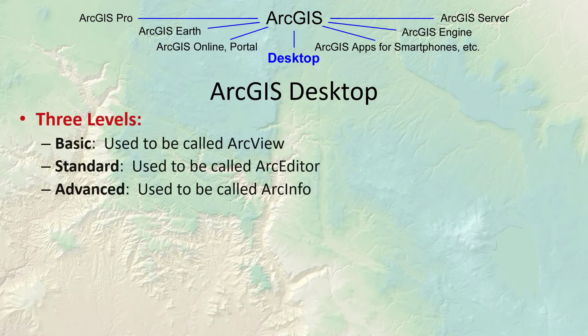Within Desktop there are three license levels: Basic, Standard, and Advanced. As a student, or if you're working with BLM, Park Service, BIA, or Forest Service, these sources all have the Advanced level. If you wind up working for a small non-profit, there's a fair chance they can't afford the Advanced level, so you'll only be using Basic or Standard. I really want you to understand the differences between these.